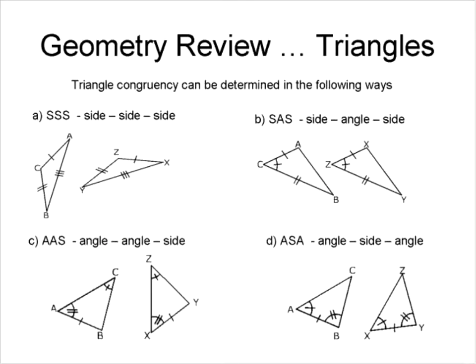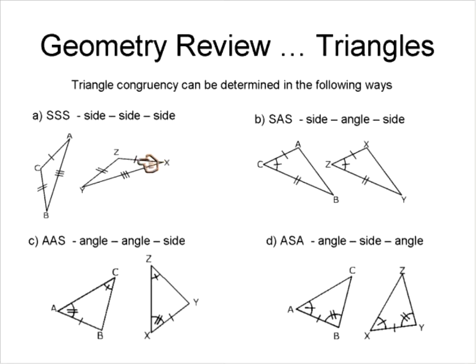Here's how we can determine whether triangles are congruent — we have these congruency properties. The first one is Side-Side-Side (SSS). If we have two triangles and all of the sides correspond to each other, as in this example, then we can say these two triangles are congruent by SSS.